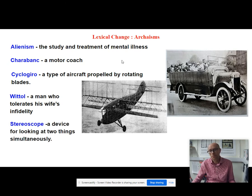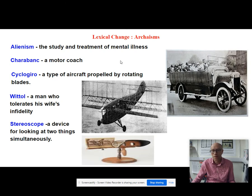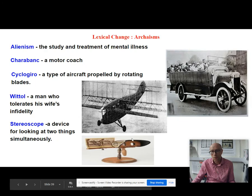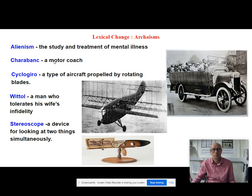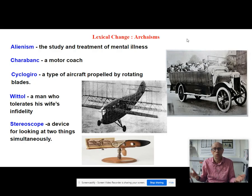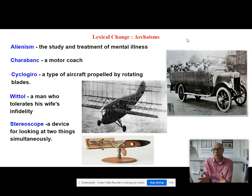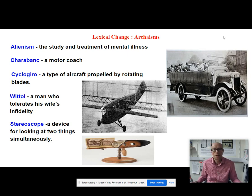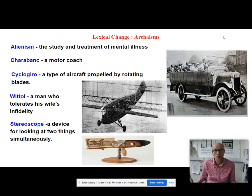Finally, a stereoscope is a device for looking at two things simultaneously. That one, and the Sharabang and cyclogyro, are all good examples of how technology changes and therefore some words are superseded and become archaic. Have a look out for other borrowed words coming into the language from other languages and think about how and why — what are the social, external factors that mean English has borrowed those words? And think of words which have disappeared from the language; if you're a literature student studying older texts like Milton's Paradise Lost or Shakespeare, you'll come across words that are unfamiliar — some of them are archaisms.